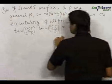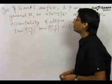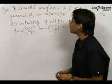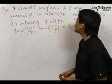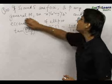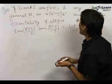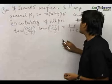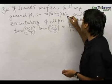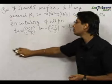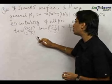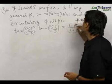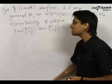Our tenth problem is very important and similar to the earlier problem. We are given that S₁ and S are the foci of the ellipse, P is any general point of the ellipse, and e is the eccentricity of the ellipse x²/a² + y²/b² = 1. We need to prove that tan(∠PS₁S / 2) · tan(∠PSS₁ / 2) = (1 - e) / (1 + e).